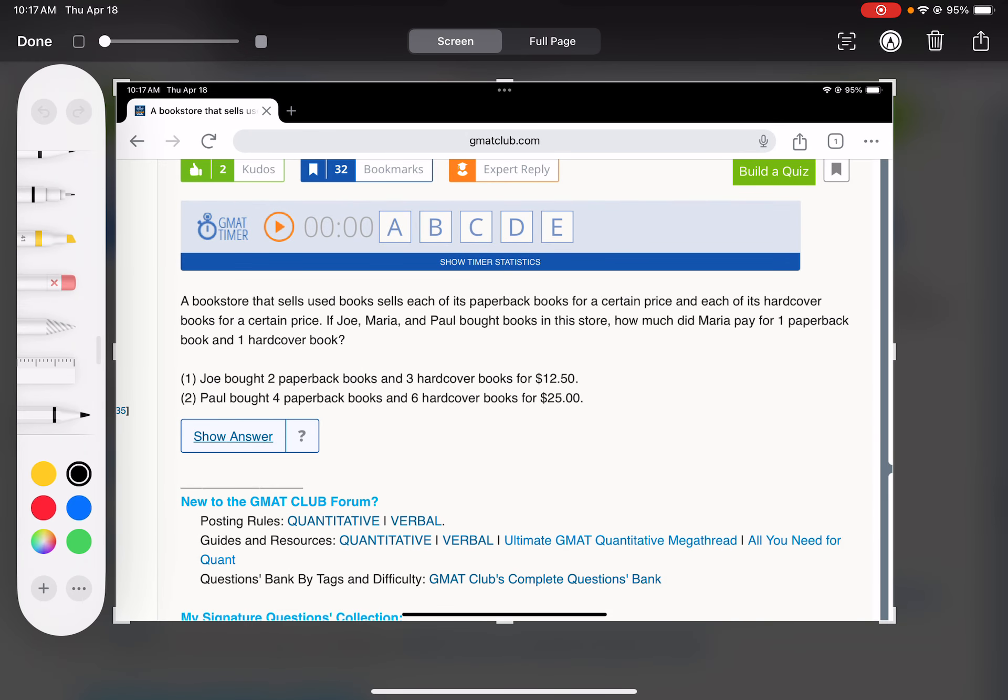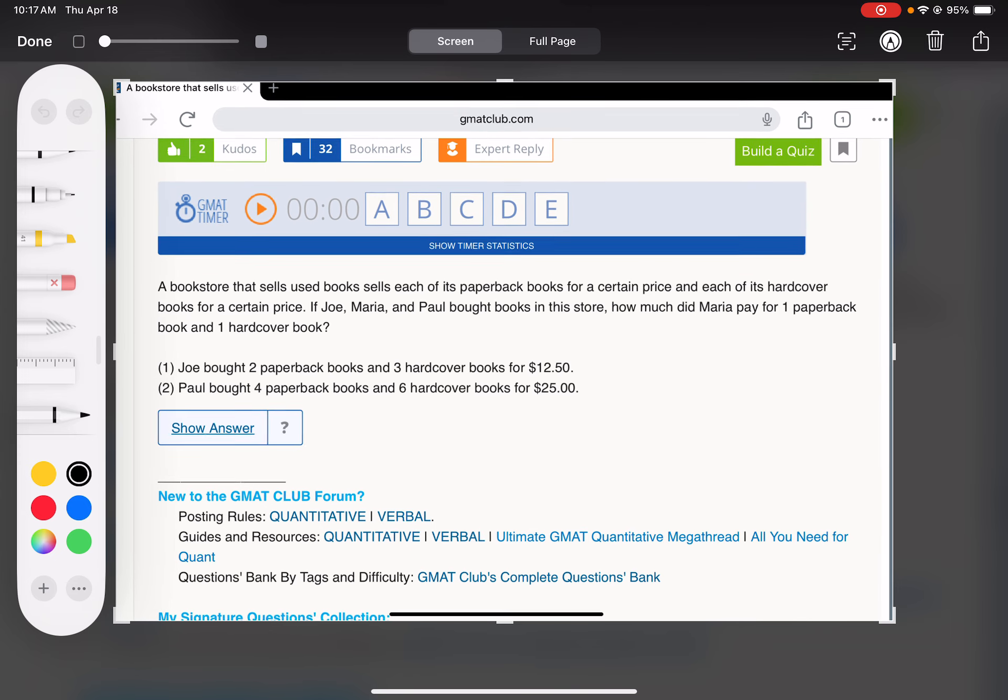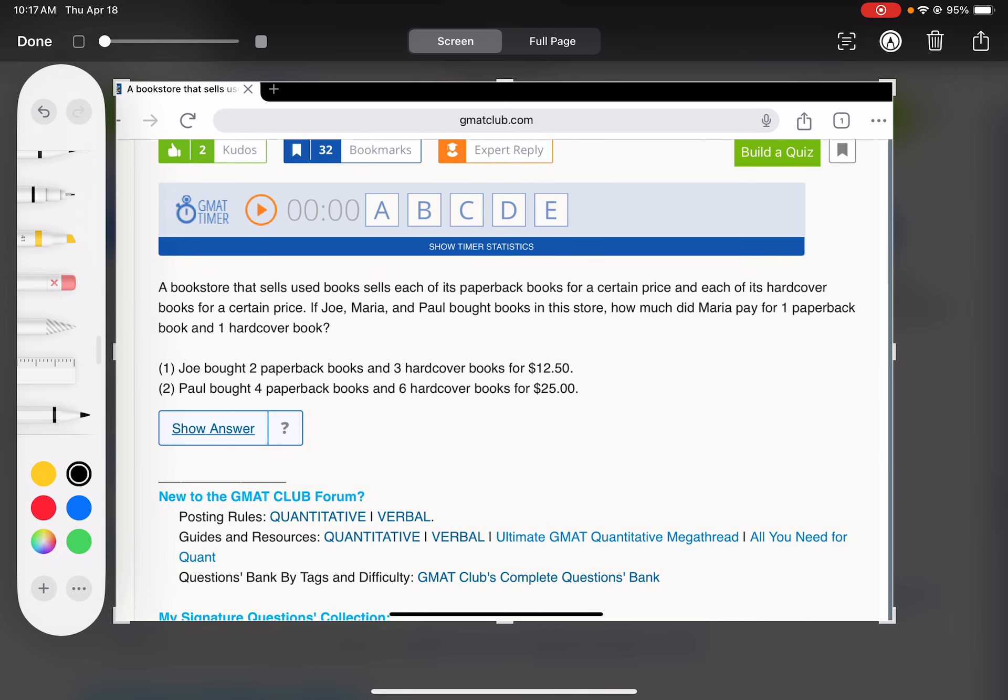All right, so Joe, Marie, and Paul bought books. How much did Marie pay for one paperback and one hardcover? So we want to know what does P plus H equal? That's one P plus one H.